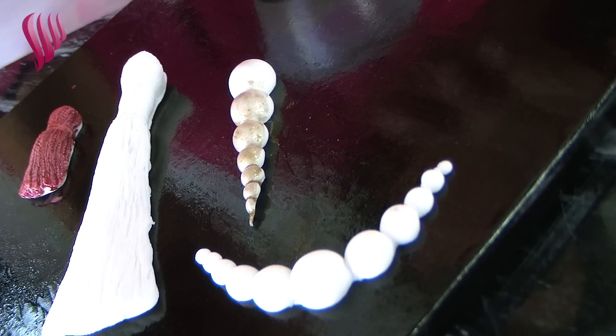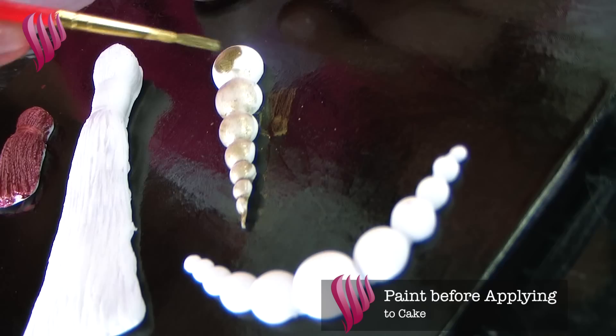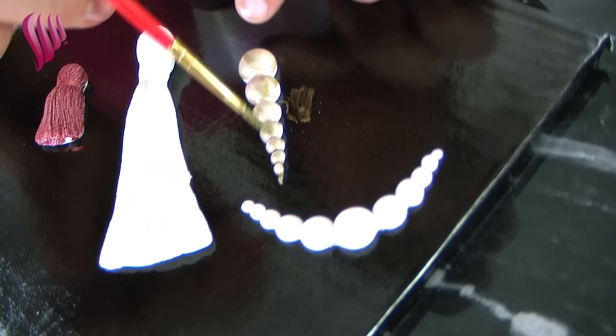And again, you can go back with a second coat. One thing if this is sitting on the cake already—you'll want to be careful not to slop behind it and get it on the cake. If you want to paint it individually off the cake and then apply it to the cake, that would work really well.